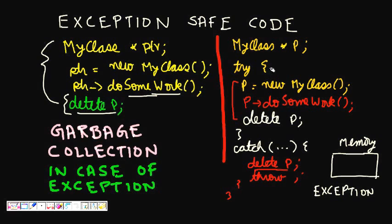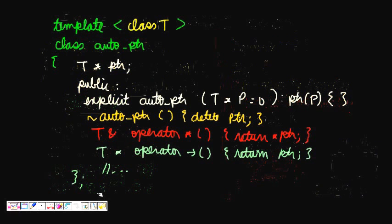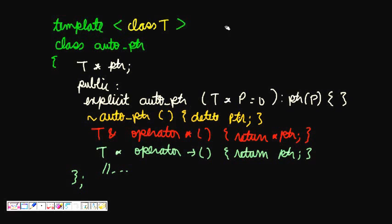But you can see how much complexity that adds. Every time you allocate memory you have to write a try-catch block, which doesn't look clean and requires a lot of extra work. So to solve this problem we have something called a smart pointer.